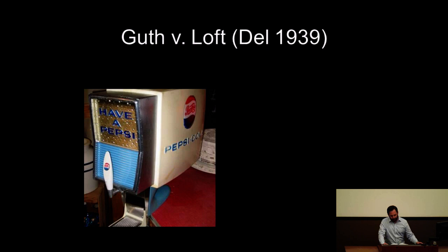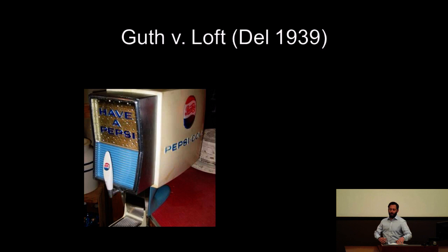We have an initial test from 1939: a corporate fiduciary cannot take a business opportunity for himself if it is one the corporation could financially undertake, is within the line of the corporation's business and is advantageous to the corporation, and is one in which the corporation has a reasonable interest or expectancy. This expanded the corporate opportunity doctrine with a broad framing — a lot of things can fall into this category.